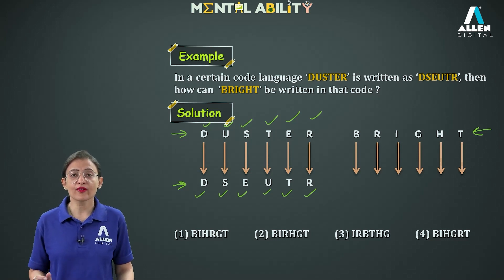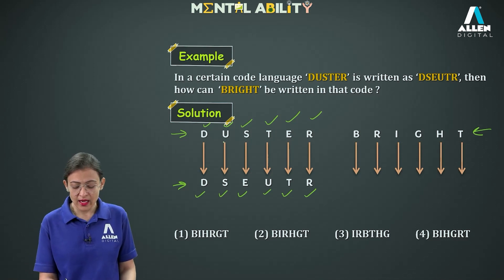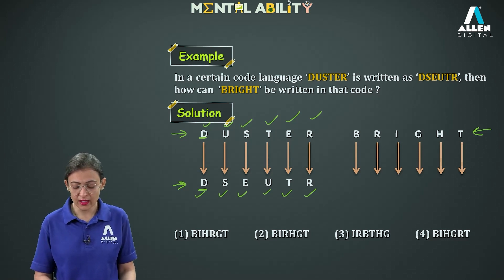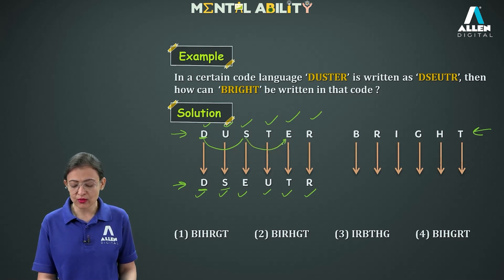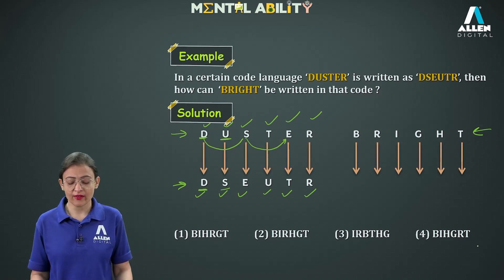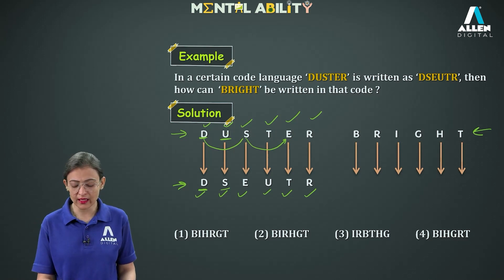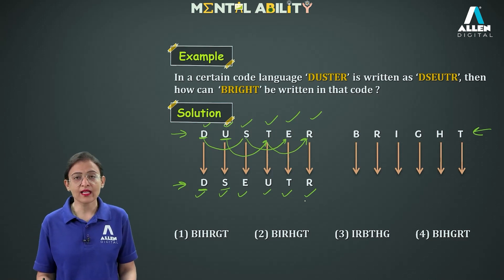What pattern of reordering is here? We write D first — the first letter of the word. Then, leaving one letter in between, we move to S. Leaving the next letter, we move to E. Then we start with the second letter U, leaving one letter moving to T, then leaving one letter moving to R. So the code is D, S, E, U, T, R — every alternate letter from position 1, then every alternate letter from position 2.